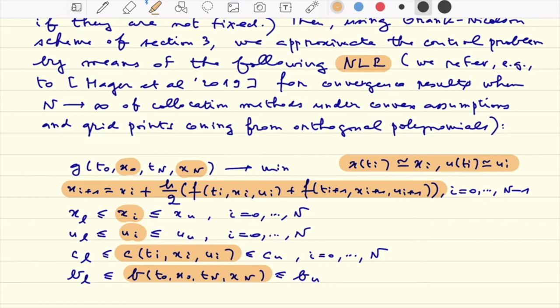And even more simply on the boundary constraints. So what do we have now? We have a problem whose unknowns are not anymore t0, tf and functions x for the state and u for the control, but discrete vectors x0, x1 to xN and u0, u1 to uN.